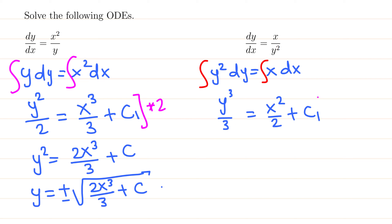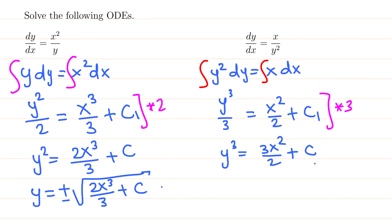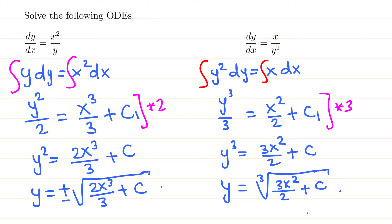To solve for y, multiply through by 3 — we get y cubed equals 3x squared over 2 plus 3c₁, which we just write as c. Then y equals the cube root of (3x squared over 2 plus c). There is no plus or minus here since it's a cube root. That's the final answer.